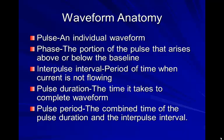The anatomy of a waveform: we have a pulse, which is the actual individual waveform. The phase is the portion of the pulse that arises above or below the baseline. The interpulse interval is the period of time when the current is not flowing — that's the time between pulses.